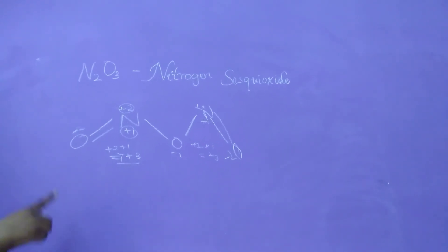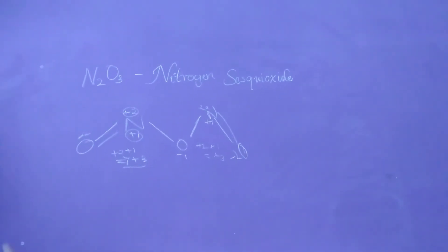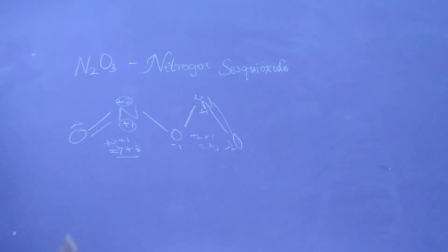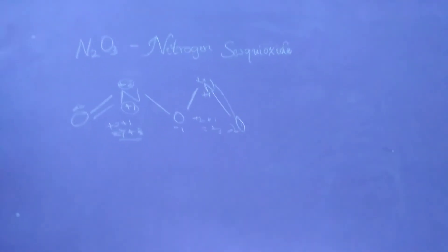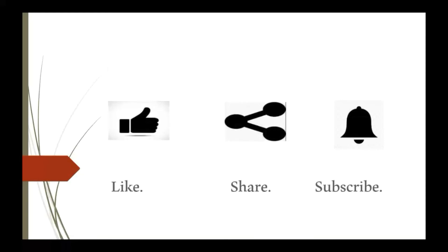So in calculation method, we got one nitrogen will be equal to plus 3. And as well as in structure method also, we got one nitrogen is equal to plus 3. So verified. That's it. If you like my video, please like, share and subscribe. Thank you.